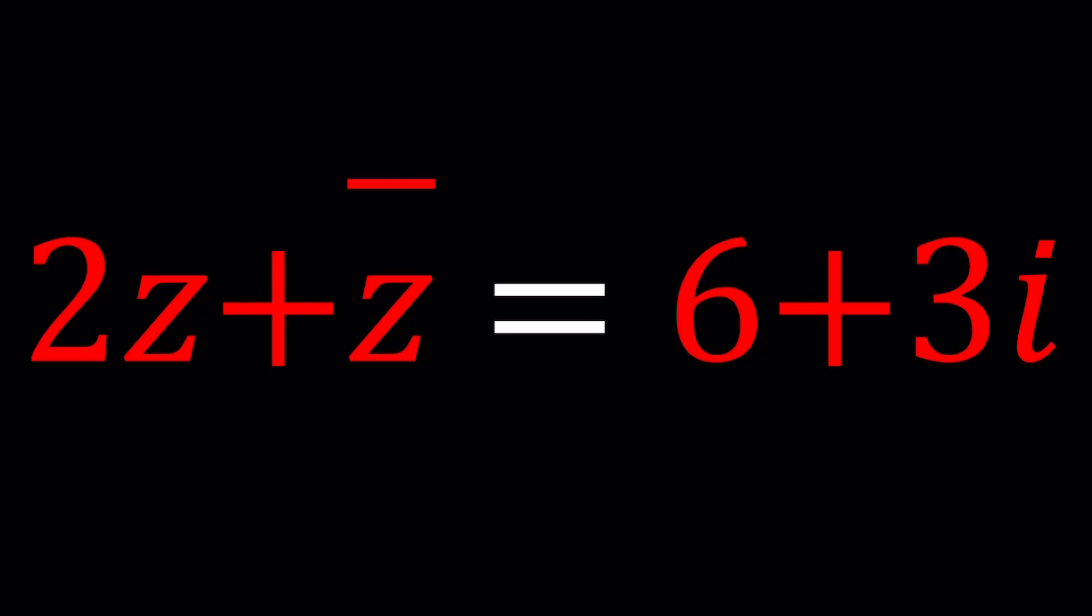We have 2Z or not 2Z, allow me to make that joke, plus Z bar which is the conjugate of Z equals 6 plus 3i. So we're trying to solve for Z. Obviously Z is a complex number and I'll be presenting two methods. Even though the methods are fairly similar, there are slight differences. So let's start with the first method.